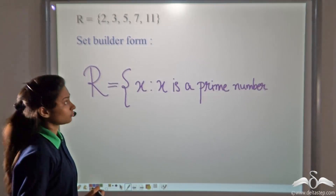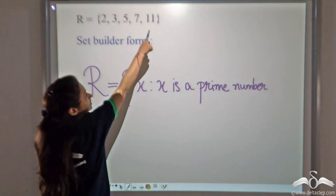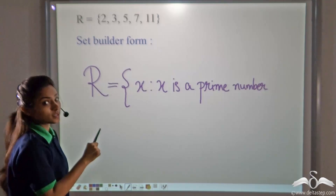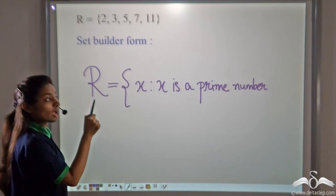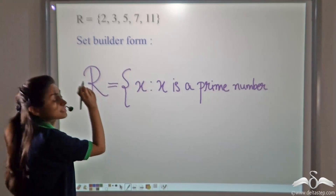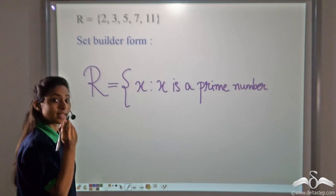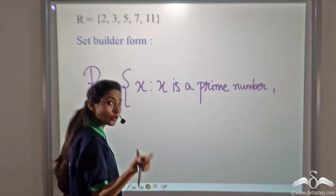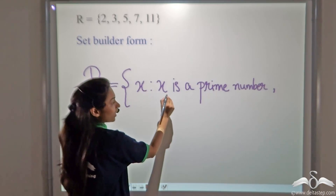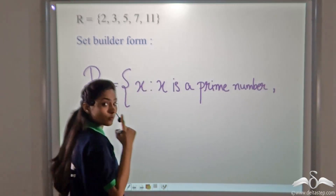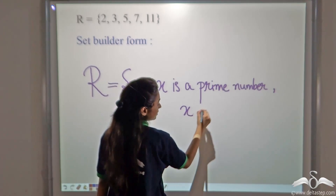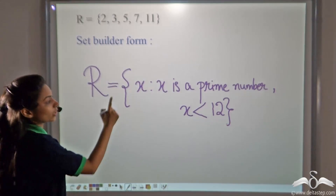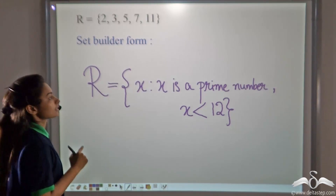Now, is my answer complete? No. You can see that the set ends on 11 — it does not go further, it has no ellipsis. That means the set ends on 11. So we have to give some property which states that it ends at 11. So what we can write is: x is less than 12. We will use a comma to write property 2. We have x such that x is a prime number, which is property 1, and one more property: x is less than 12. Close the curly bracket. So we have two properties in this set builder form.